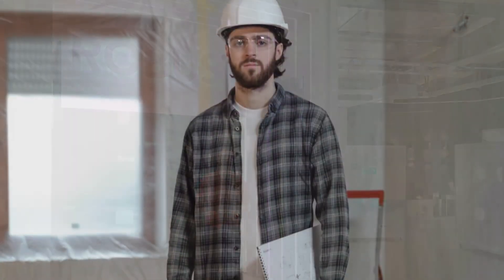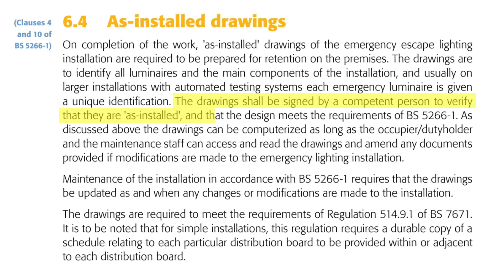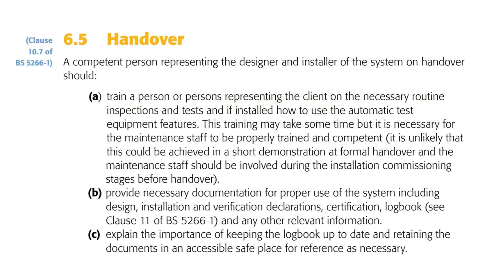Another example of a task for a competent person is the requirement to produce as-installed drawings of the emergency lighting system. The guide states that the drawings shall be signed by a competent person to verify that they are as installed and that the design meets the requirements of BS 5266-1. Additionally, a competent person will oversee the handover process to the building maintenance staff, including providing training, relevant documentation, and highlighting the critical nature of maintaining the emergency lighting logbook. Signing the as-fitted drawings and carrying out the handover would be the job of the installer as the competent person, rather than the emergency lighting designer from Robus if you've used that service.